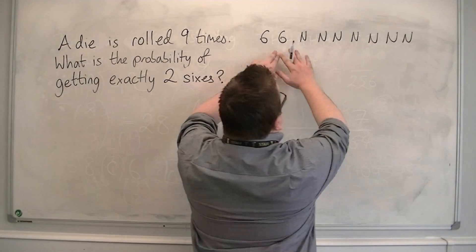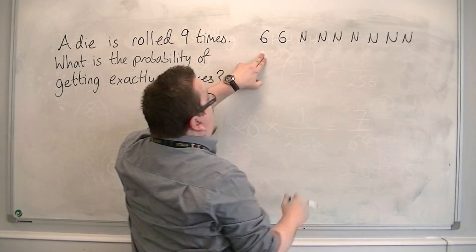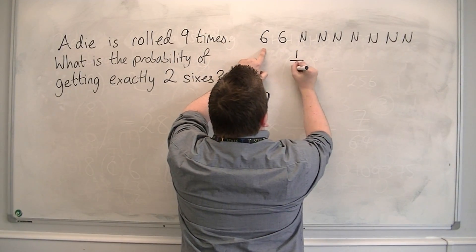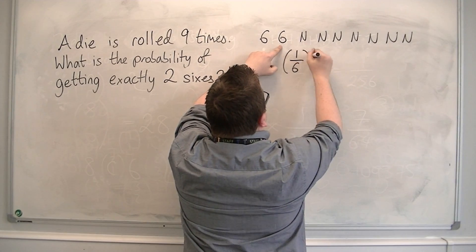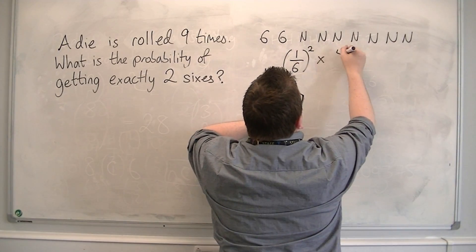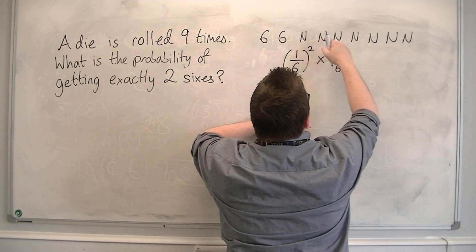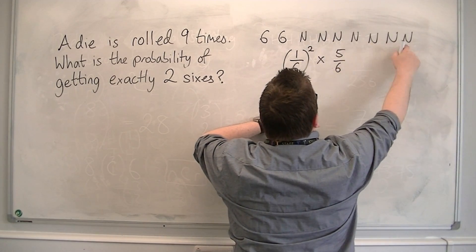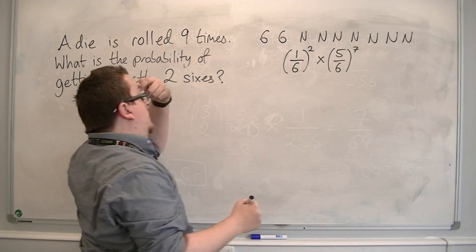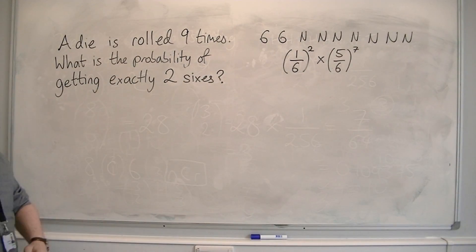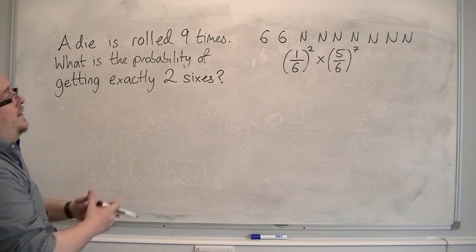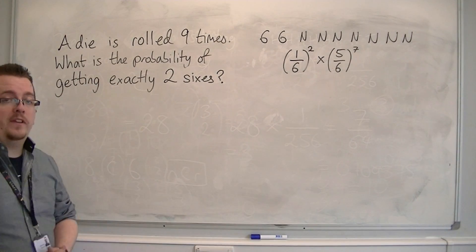To work out the probability of that: this is one over six times one over six, so one over six squared, times five over six to the power of seven. So that's the probability of just one of the events occurring.